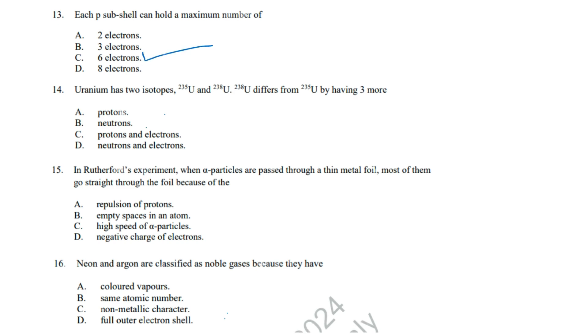Question 14: The difference between U-238 and U-235 is 3 additional neutrons. Correct answer: B, Neutrons. Question 15: Rutherford's experiment showed that atoms are mostly empty space, allowing most alpha particles to pass through. Correct answer: B, Empty spaces in an atom.